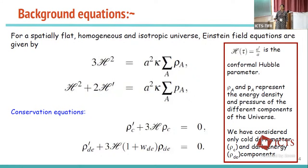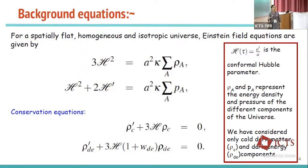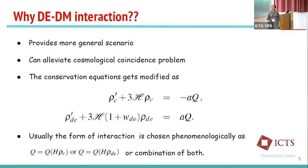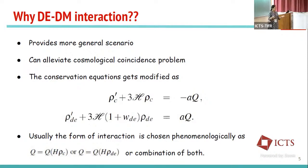These are the conservation equations for these two components. The zero on the right-hand side indicates that the two dark sectors are independent and conserved separately. Since we don't know the nature of dark energy, it may happen that these two components are interacting among themselves. If we consider that the two dark sectors are interacting, this will provide a more general scenario, since we don't know anything about these dark components.